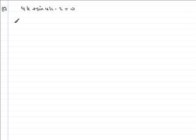Now in order to show this I'm going to let, and it's important that you put let because I'm going to define f of k as being 4k plus sine 4k minus two, the left hand side of this equation.